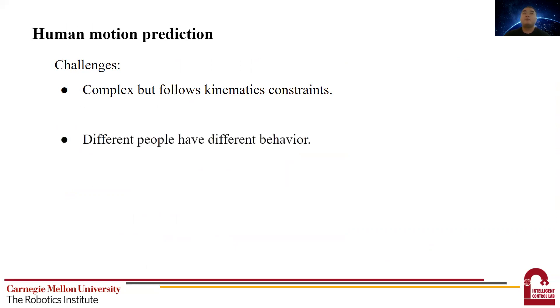Second, different people have very different behavior due to their habits or body structure. It is difficult to comprehensively learn all possible behavior patterns. And third, during the work, some body parts might be invisible by the camera occasionally. So how to make the prediction robust to occlusion is also very important.